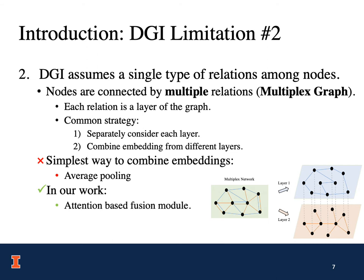We propose to use the high-order mutual information to jointly capture both extrinsic and intrinsic signals. We also propose a novel high-order DeepInfoMax, HDI for short, as the training signal. The second limitation of DGI is that it assumes a single type of relationship among nodes. However, nodes within real-world networks are usually connected by multiple relationships, which are actually multiplex graphs. The common strategy is to firstly separately consider each layer, and then combine embeddings from different layers. In our work, we propose an attention-based fusion model to combine embeddings from different layers.